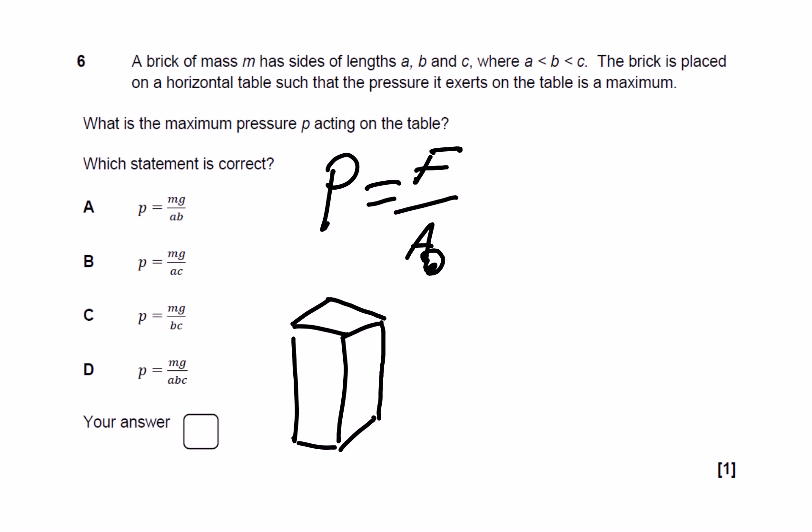So we can do that by having our two smallest sides, or the face that's made from our two smallest sides, at the bottom. So we would want A being the smallest, B being the second smallest, and therefore C would be our upright one.